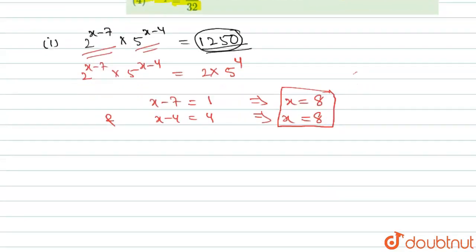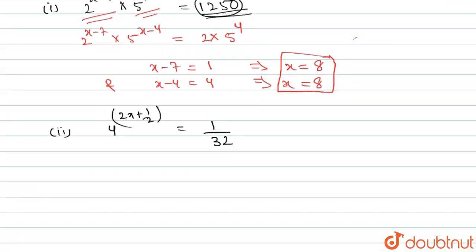The second part is 4 to the power 2x plus half equals 1 by 32. In this question we have to simplify for x. Since 4 and 32 are both multiples of 2, we will first convert them into powers of 2 and then equate the respective powers as we did in the earlier question.